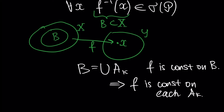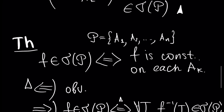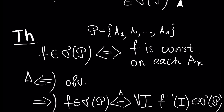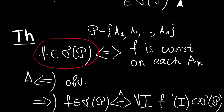This finishes our proof. We proved a result which is fundamental, and we will use this result for the finite case very often. In other words, if our function f is measurable, it will be constant on each element of the partition which generates the sigma algebra where f is measurable.